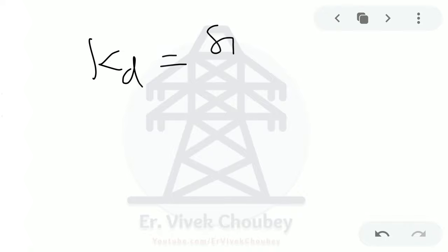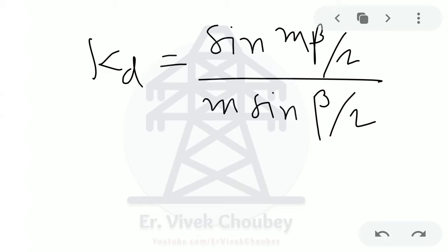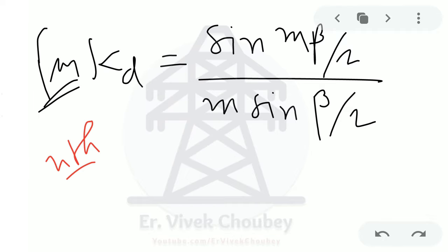The distribution factor Kd for the fundamental EMF is given by: Kd = sin(m × beta/2) / (m × sin(beta/2)), where m is the phase belt (number of slots per pole per phase) and beta is the electrical angle between two consecutive slots. Since lambda = m × beta, the numerator sin(m × beta/2) can be expressed using the phase spread lambda. This is Kd for the fundamental EMF.